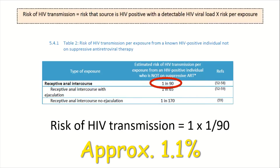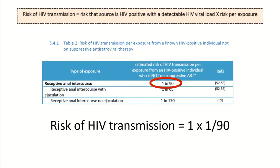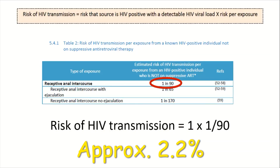If receptive anal intercourse happens twice in a short period of time, then we need to add the two exposures together to get a cumulative risk of HIV transmission during that period of time. So if receptive anal intercourse happens twice with the same man, the risk would be 2 in 90, which is approximately 2.2%.